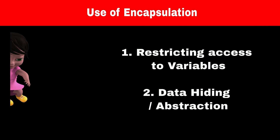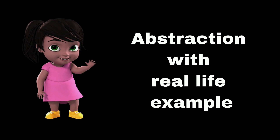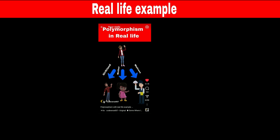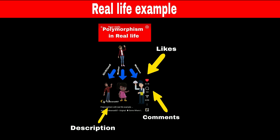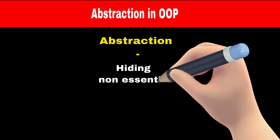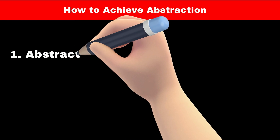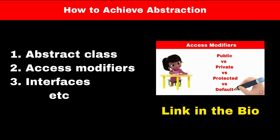Abstraction is also an OOP concept inspired by real life. Consider the example of Instagram - it shows only relevant information to you like likes, comments, and the description of the video, while hiding confidential and irrelevant information like the ID of the video, country of origin, and the complex algorithm Instagram uses to show the video. Abstraction is a mechanism that allows us to hide irrelevant or confidential information so users can only see the relevant and essential details. We can achieve abstraction using abstract classes and access modifiers.